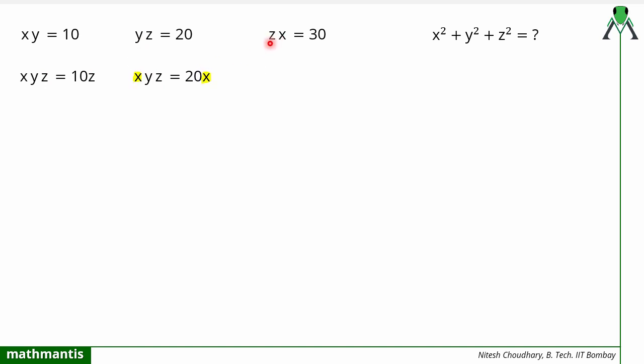Same is the case here. Here z and x are available, so I will multiply both sides with y. By doing this, I am trying to find the value of xyz in terms of x, y, and z. So we can see that xyz is equal to 20x, 30y, and 10z. This is the equation we can make from the given condition.